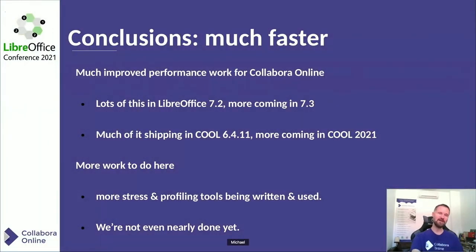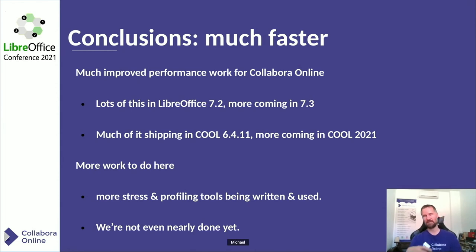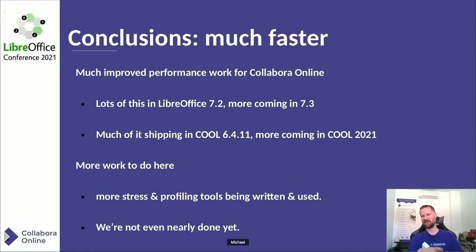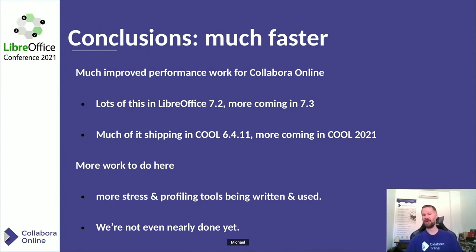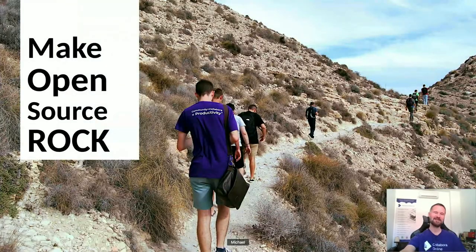In conclusion, we're much faster. A lot of the core work is in LibreOffice 7.2 and more is coming in 7.3. A whole lot is already shipping in Collabora Online 6.4.11. Some of the riskier rendering and invalidation changes are coming in the next month or two. There's a lot more work to be done — we're writing stress and profiling tools that replay traces. We're not nearly done; there's a factor of two improvement at least almost everywhere you look. The real trick is knowing what to optimize and looking at the profiles.